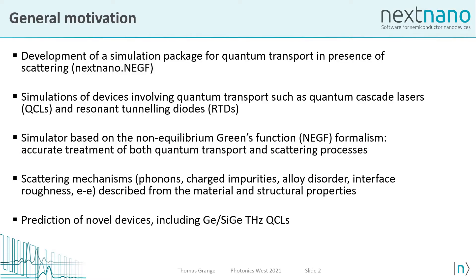Let me first introduce some background of this work. One of our aims at Nextnano is to develop a simulation package for quantum transport in the presence of scattering. This package allows for the simulation of devices involving quantum transport, such as quantum cascade lasers and resonant tunneling diodes. This simulator is based on the non-equilibrium Green's function formalism, which allows for an accurate treatment of both quantum transport mechanisms and scattering processes. In this formalism, the scattering mechanisms can be described directly from the material and structural properties. The aim is to be able to predict novel devices, in particular quantum cascade lasers made of novel materials such as silicon-germanium.